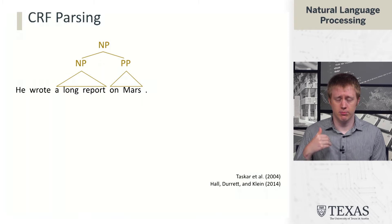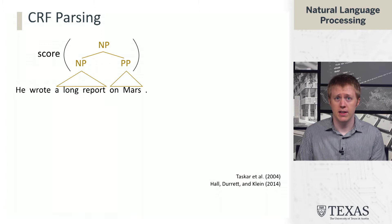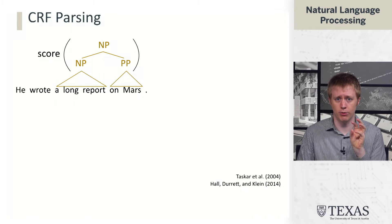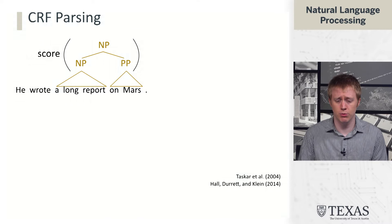most modern parsers do not use PCFGs as such. It's much more common to build what's called a CRF parser. Similar to CRFs for NER, fundamentally what we're doing is we're scoring — in NER we were scoring the presence of a tag over a particular position in a sentence, and we can score things like tag transitions as well. Here we can do the same thing.